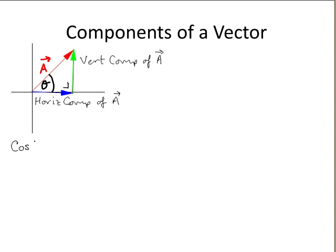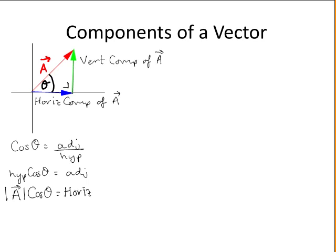So the cos of theta is equal to the adjacent over the hypotenuse. Multiplying both sides by the hypotenuse, you get this. And filling in then, the hypotenuse is equal to the length of vector a, or its modulus. And the adjacent is equal to the horizontal component of vector a. So the modulus of vector a times the cos of theta is equal to the horizontal component of a, and you may think of this as the component of a in the direction of x.